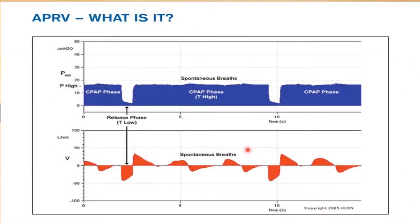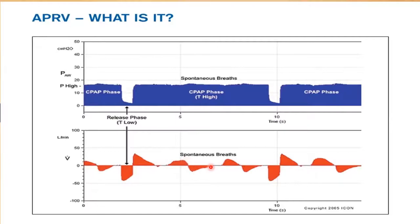Here is what APRV looks like. We have the P-high set at 25 — that's the CPAP level. The T-high determines how long we stay at that CPAP phase. After, say, seven seconds, there is a brief release. Notice that the expiratory flow on these releases does not reach zero. We're stopping the expiratory flow and returning to the P-high level. We also see spontaneous breaths during the CPAP level. There's no trigger on this mode — it's truly a CPAP level, so the patient has unrestricted breathing all along this CPAP phase.